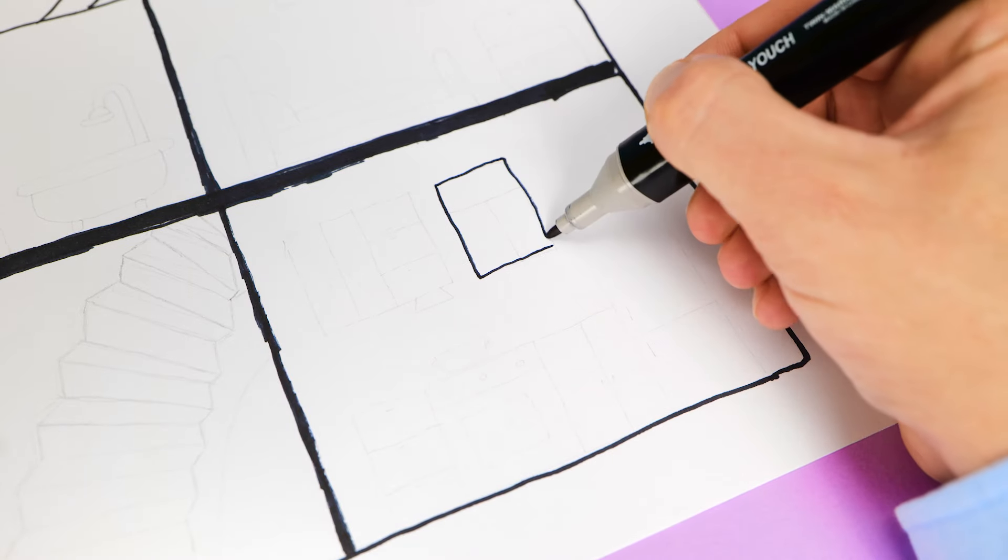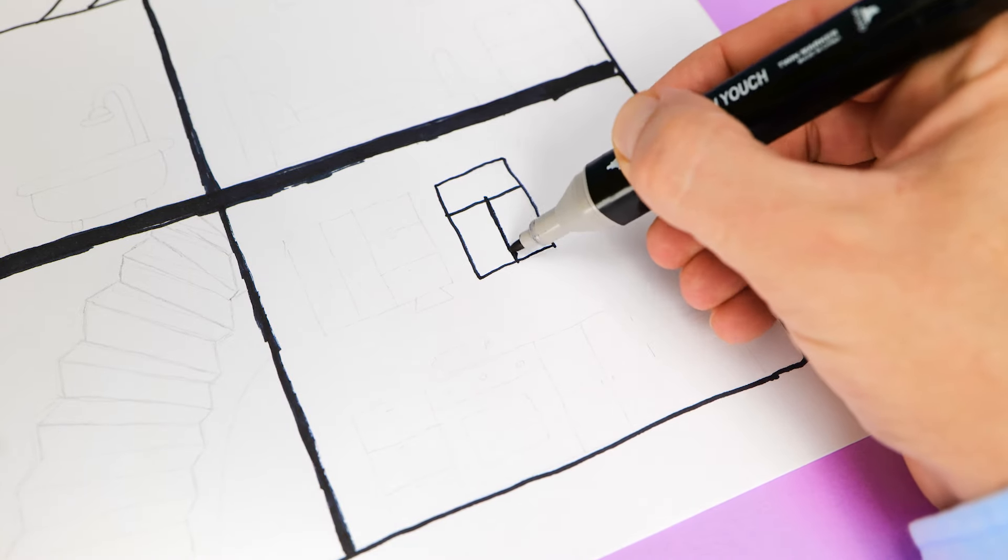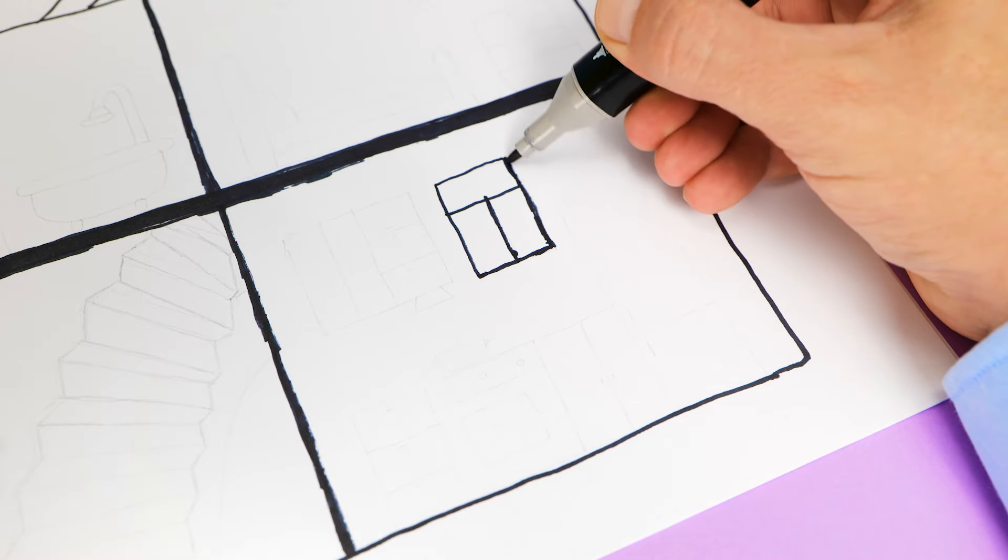Oh, I really want to start arranging them. But let's draw the windows first. Do you know what this shape is called? It's a square. Well done!